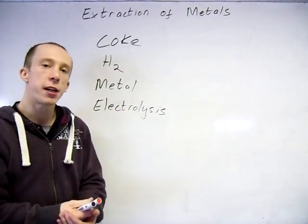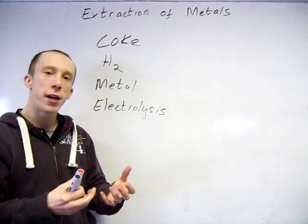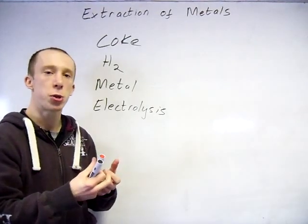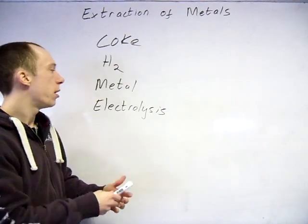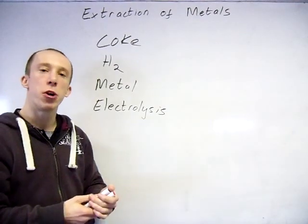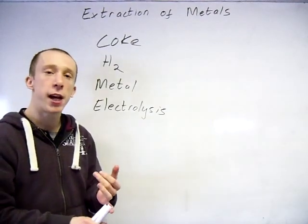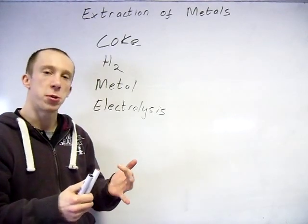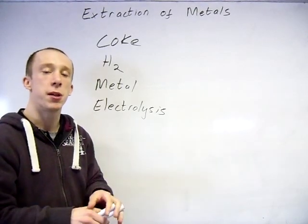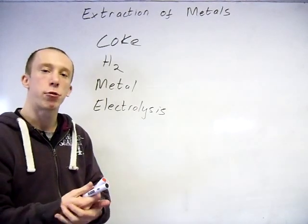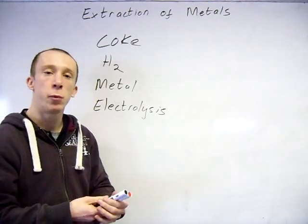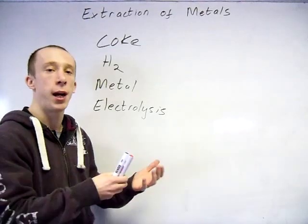You can use a more reactive metal. So a more reactive metal will tear the oxygen from the less reactive metal. Electrolysis, if you've got a highly reactive metal. So if you've got the aluminiums, sodiums, the magnesiums, things like that, then you can actually just pass an electrical current through it and it will split it up into the metal and oxygen.